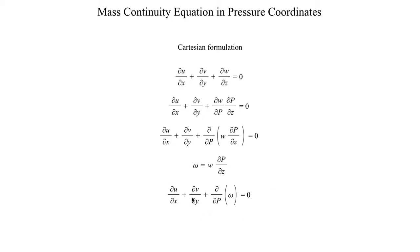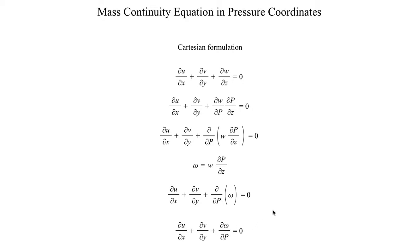This gives us: du/dx + dv/dy + d(omega)/dp = 0. We can shorthand that into the final result: du/dx + dv/dy + dω/dp = 0. This is the mass continuity equation in pressure coordinates.